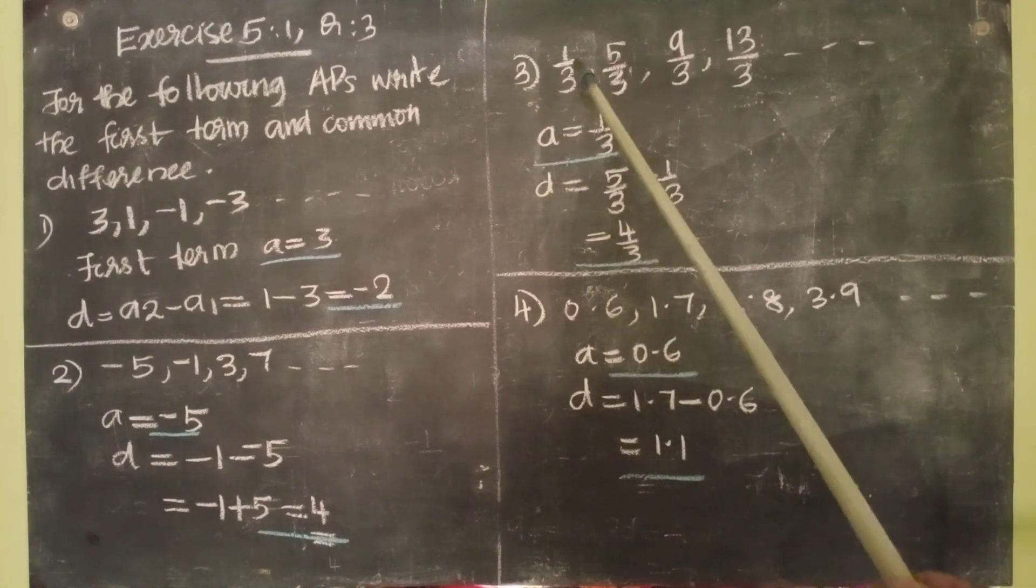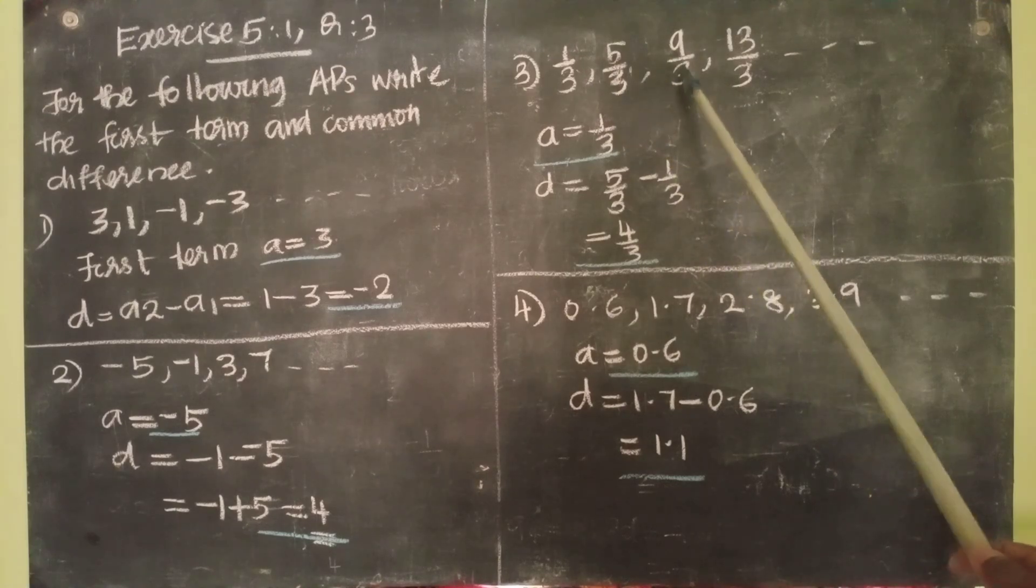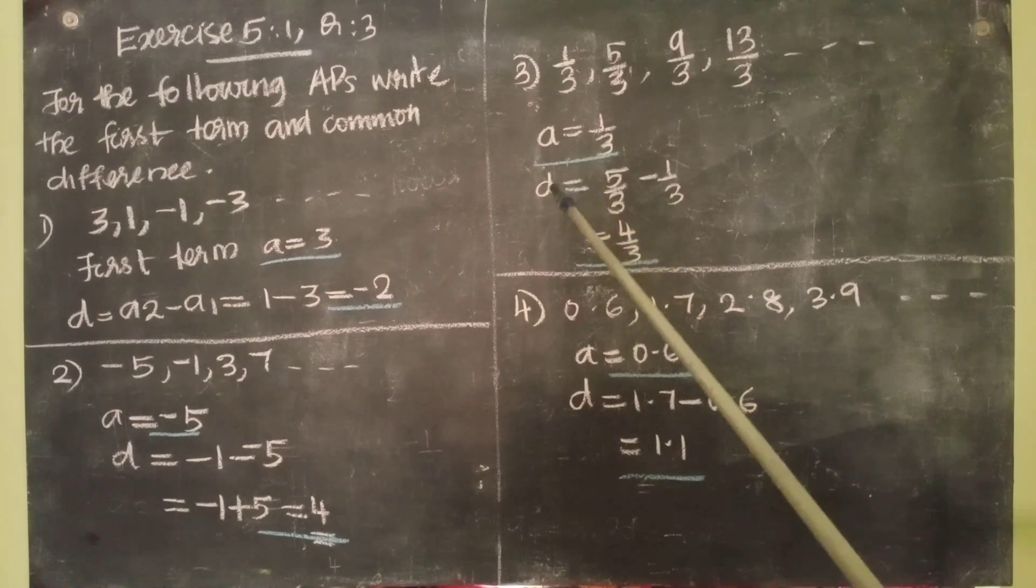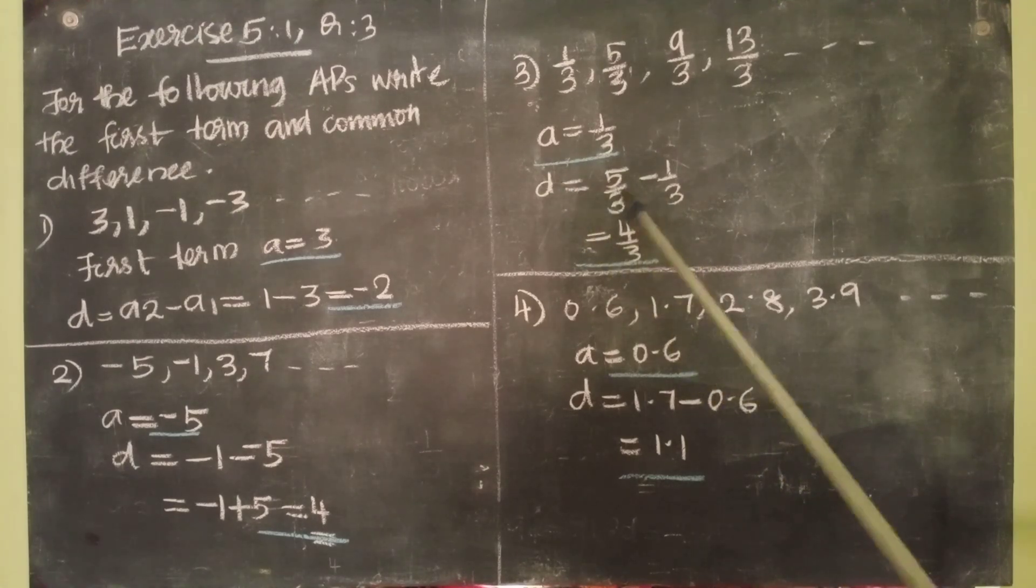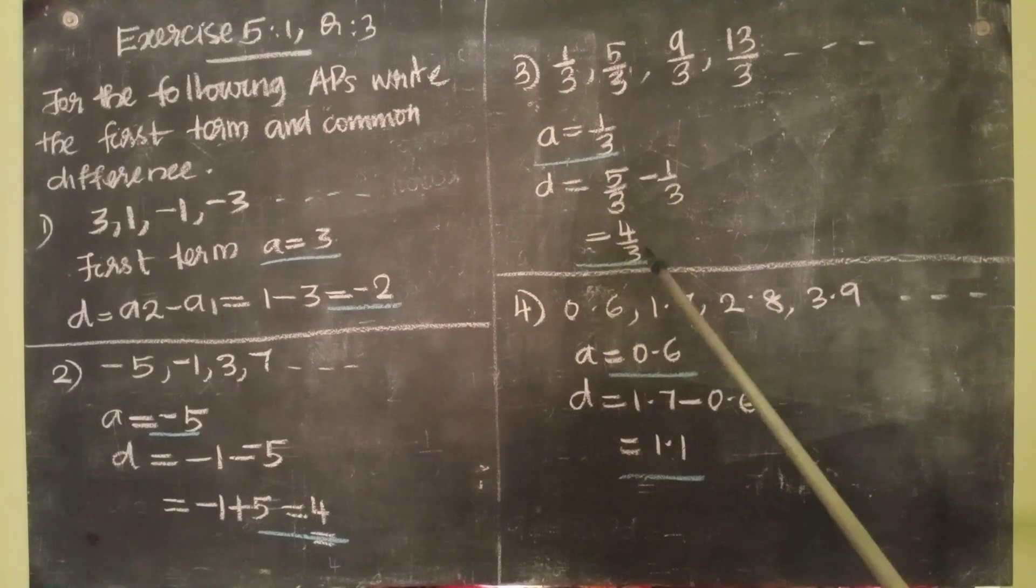Third question: 1 by 3, 5 by 3, 9 by 3, 13 by 3, etc. A equal to 1 by 3. D equal to 5 by 3 minus 1 by 3. That is equal to 4 by 3.